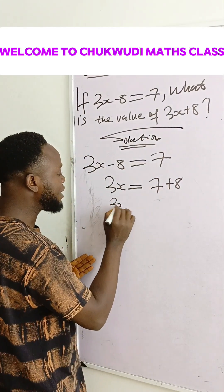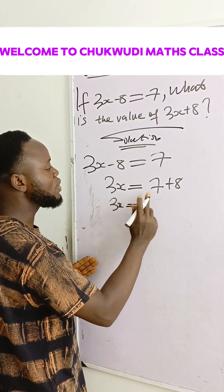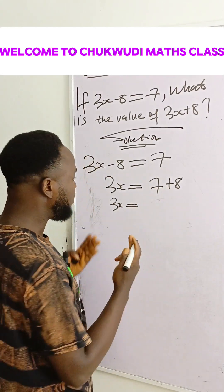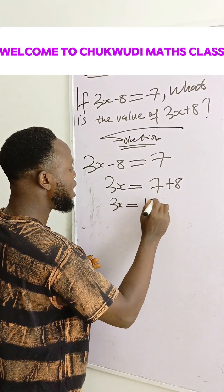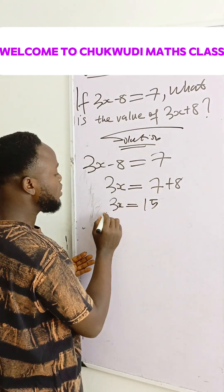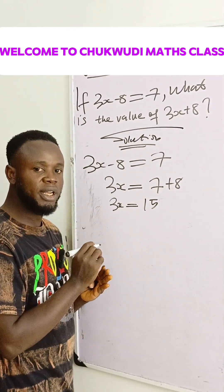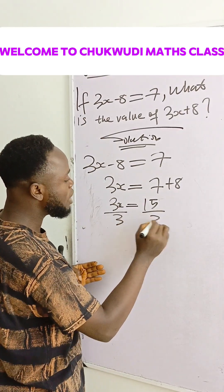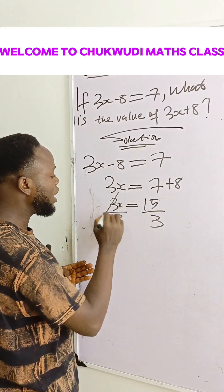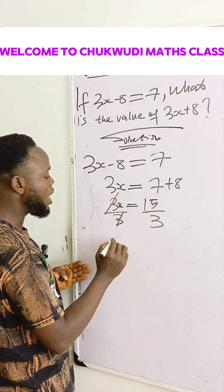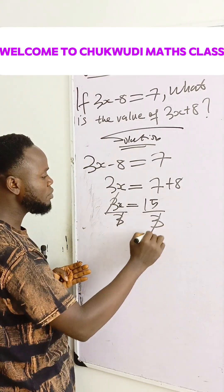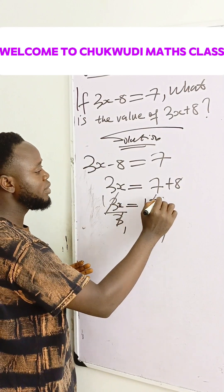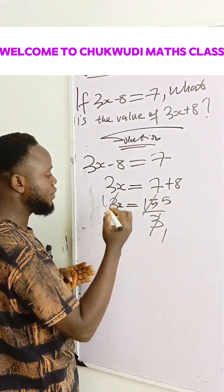So 3x is equal to 7 plus 8, which equals 15. To get the value of x, we divide both sides by 3. 3 divided by 3 gives us 1, and 15 divided by 3 gives us 5.